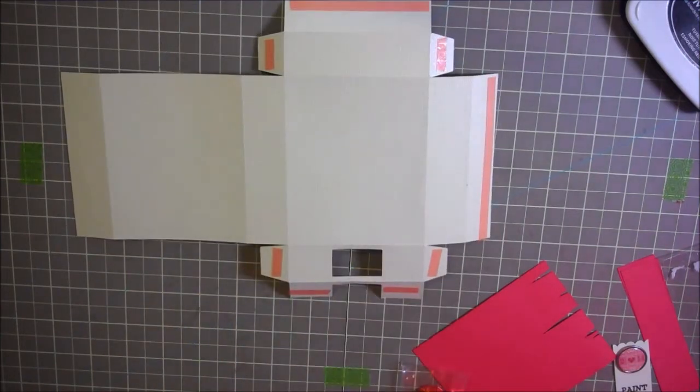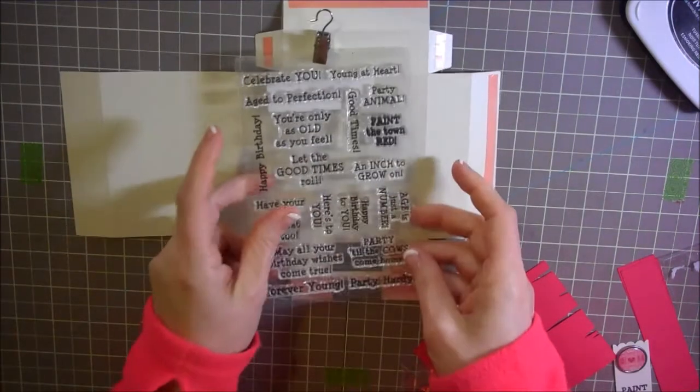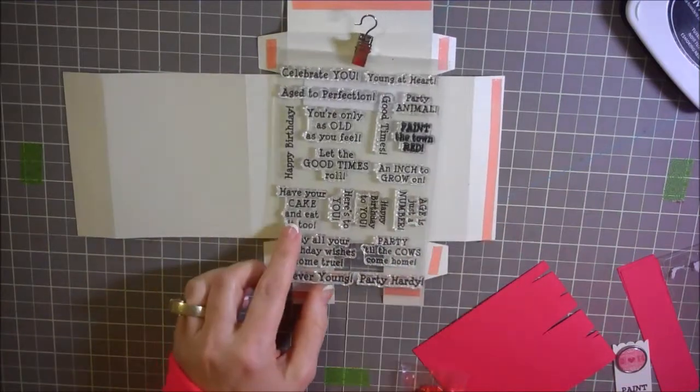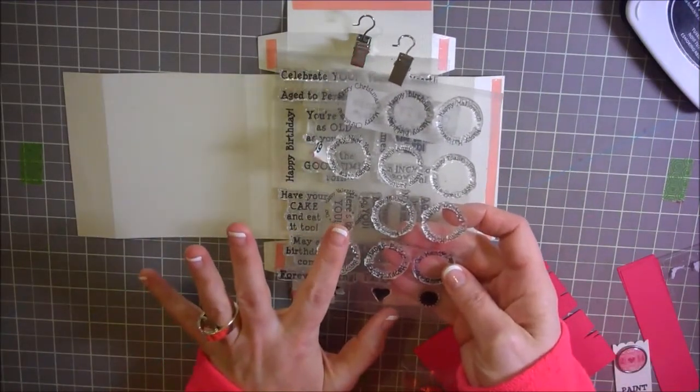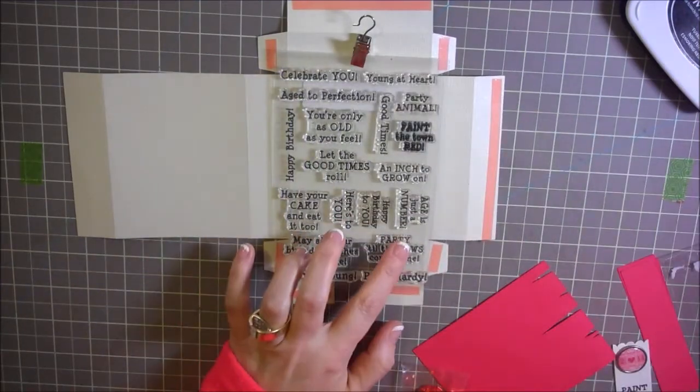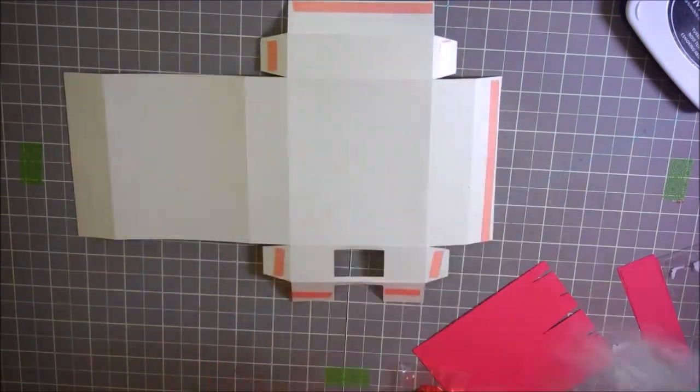The two stamp sets that I'm going to be using today are called Good Times and Going in Circles. I'm going to be using Happy Valentine's Day from Going in Circles and Paint the Town Red from Good Times.